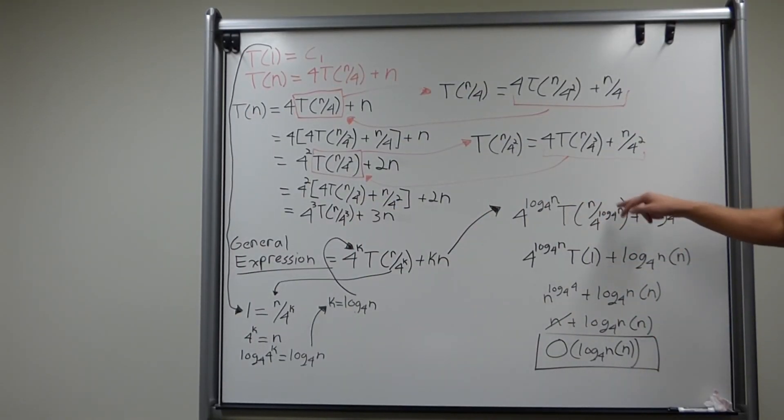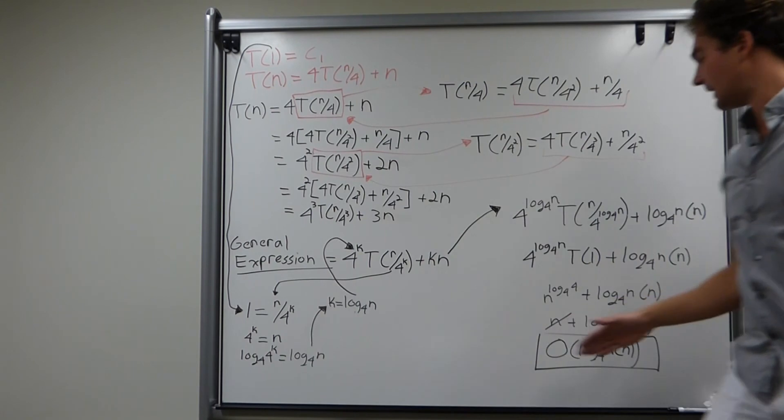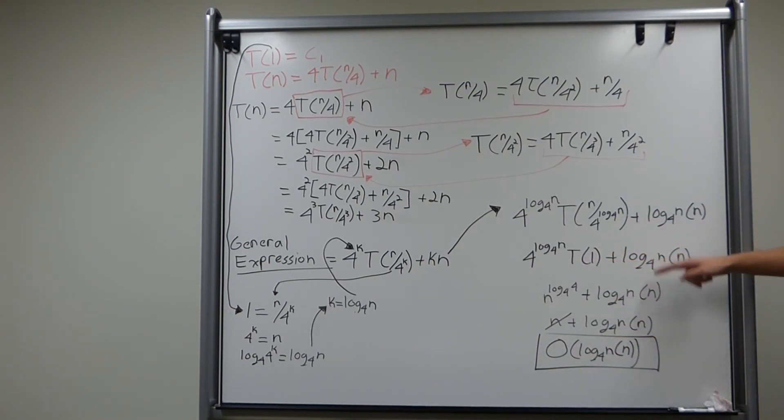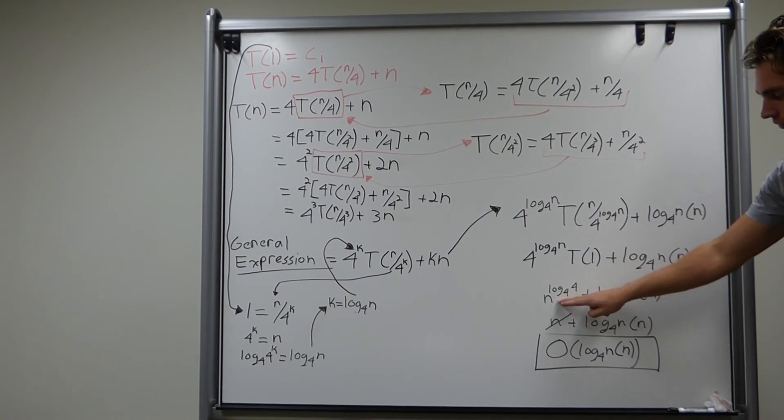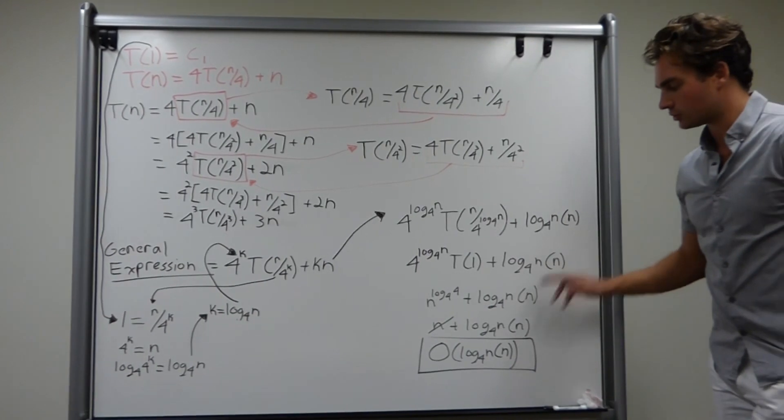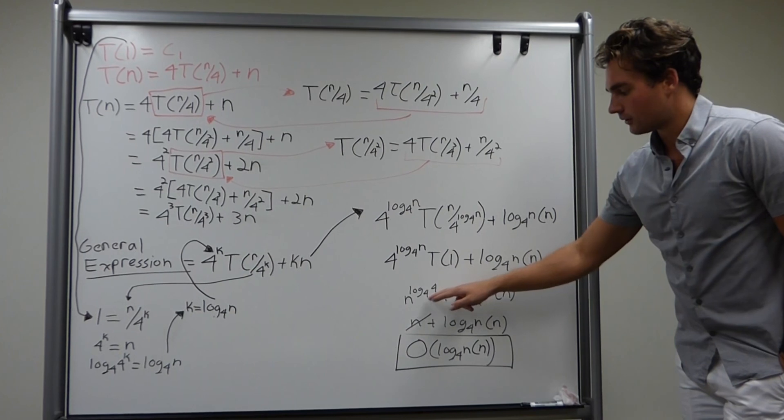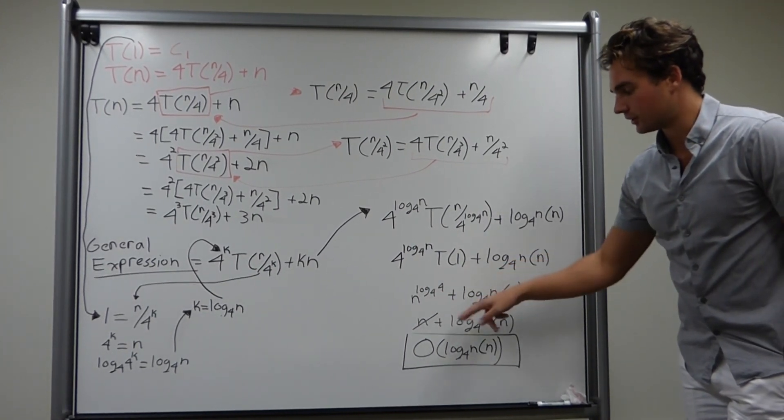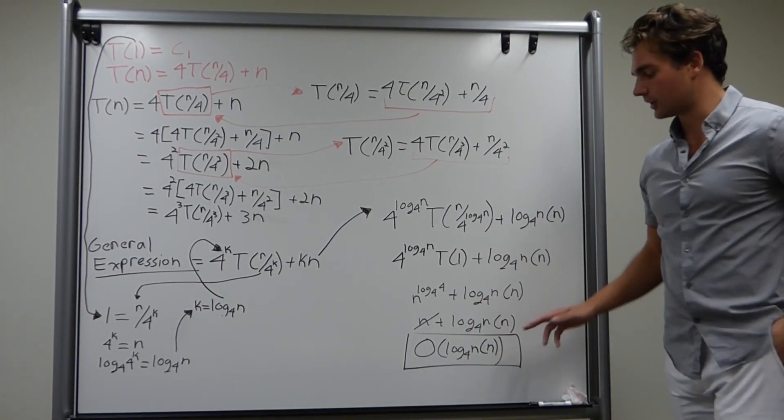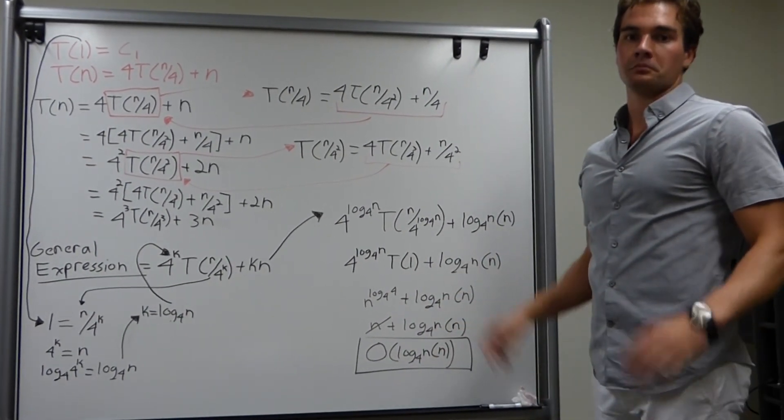Notice how here, we have n over 4 to the log base 4 of n. It becomes T(1). That's our base case. Great. The program is going to end. Produces a constant plus log base 4 of n times n. We do some logarithmic rules here, and then we apply our big O analysis, where we drop the lower order terms. One thing to know, log base 4 of 4, 4 to the 1 equals 4, therefore it's 1. So, we can cut the n, and the whole program is big O of n log base 4 of n. Awesome.